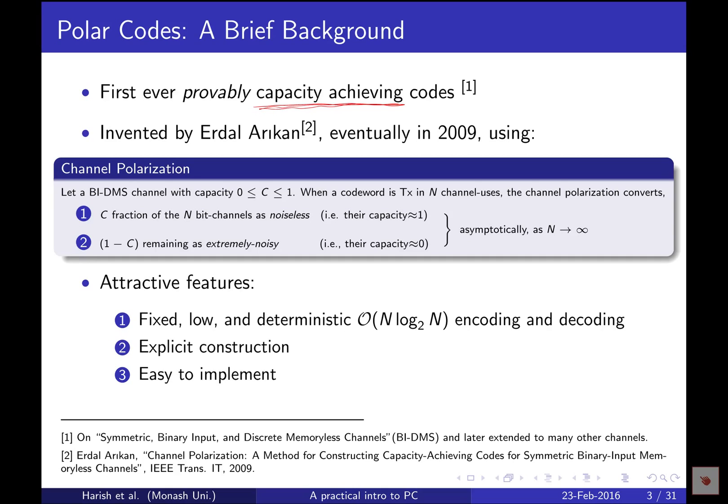Later, spatially coupled LDPC codes were also shown to achieve capacity, and recently Reed-Muller codes were shown to achieve capacity using an exponentially complex ML algorithm. But polar codes in a way inspired the later work on provably capacity-achieving codes. The inventor of polar codes is Professor Erdal Arikan, who proposed them after a series of papers on the phenomenon called channel polarization.